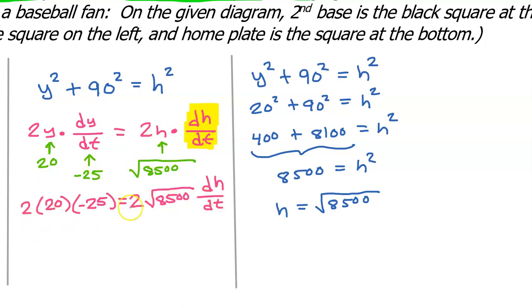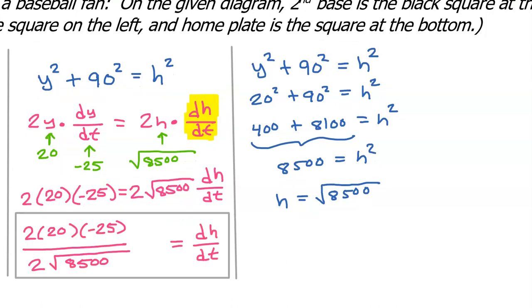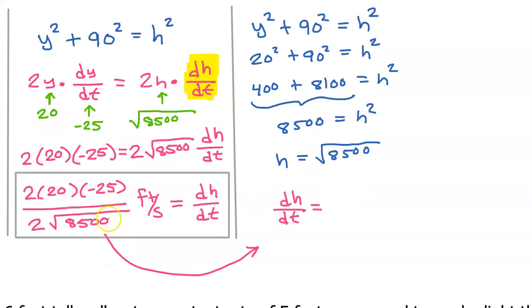So we have this. Now let's divide both sides by 2 times the square root of 8,500. As long as you include the units, this is an acceptable answer for a free response question. Just for fun, I am going to simplify this a little bit, and that would be helpful if this were a multiple choice question. Of course, these 2's will cancel out. So consider those to be gone.